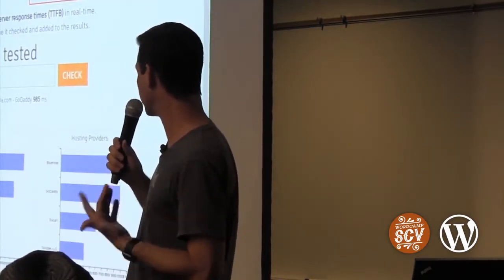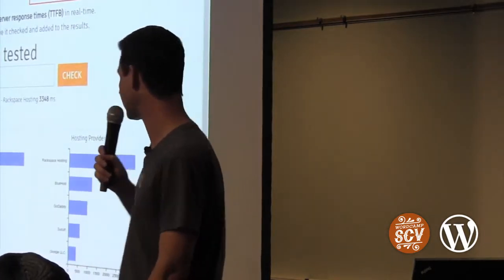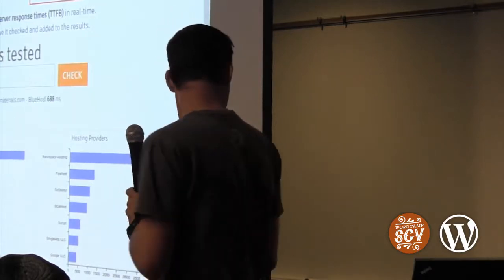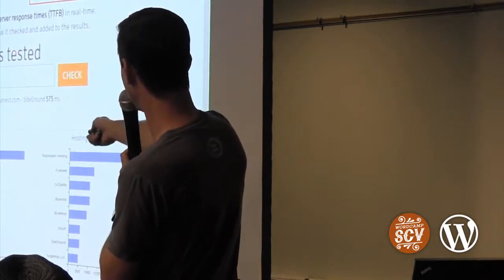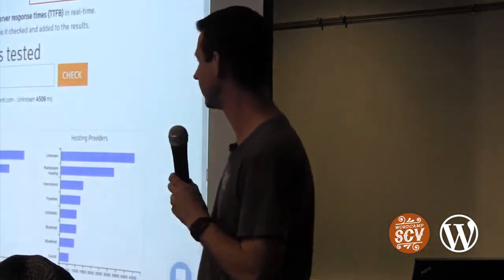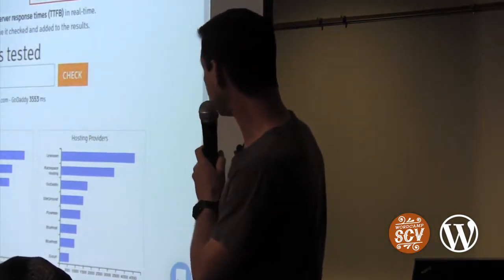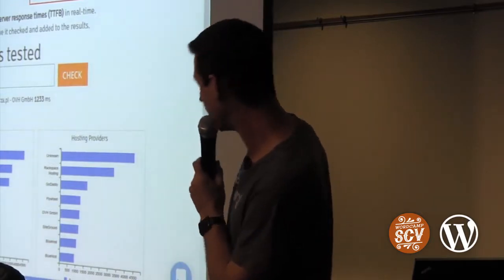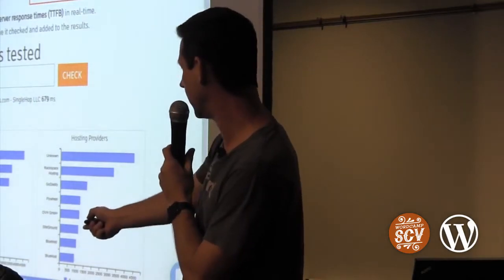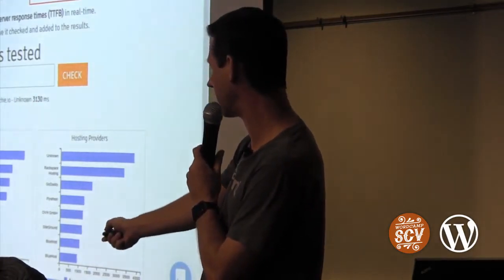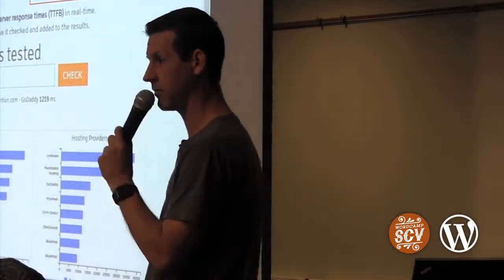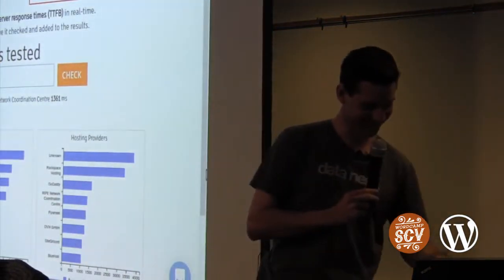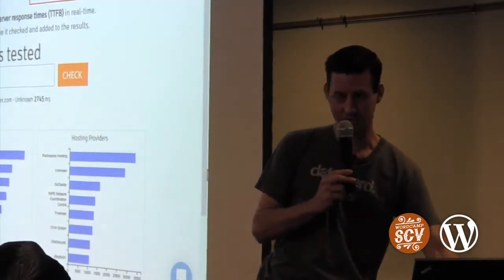So what are we seeing? This is a histogram showing the distribution of server response times. Our goal is 500 milliseconds or less — that's right here. Most sites are over here — so most sites are not fast. The results will stay up and you can hit other sites for the rest of the weekend if you'd like.